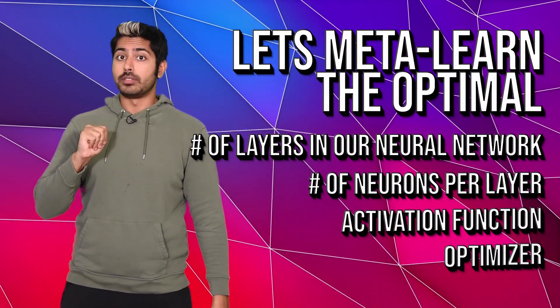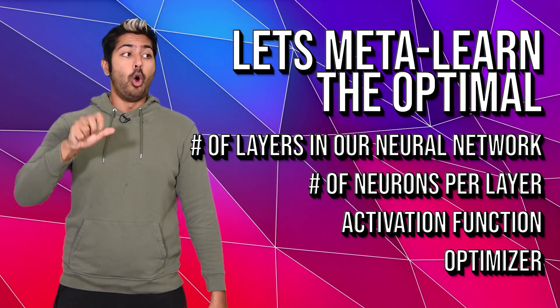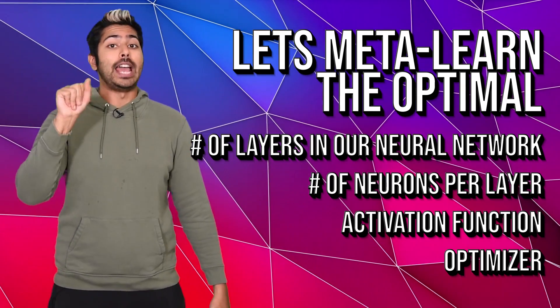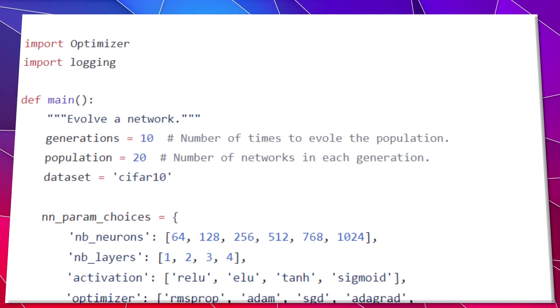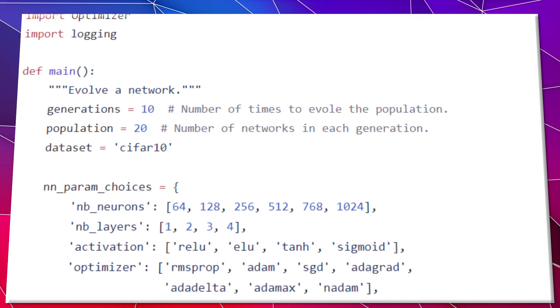So how do we perform neuroevolution using both of these processes to complete a goal? Let's say we have a very simple, fully connected neural network. Our goal will be to find the best parameters for image classification. There are four main ones. The number of layers our network will have, the number of neurons in each layer, what the activation function will be, and what the optimization algorithm will be. To start, we'll initialize our neural network with random weights, but not just one neural network like we usually do. Let's initialize several to create a population.